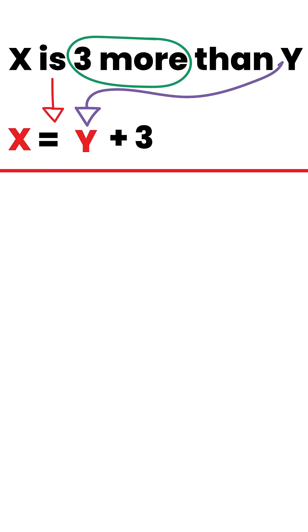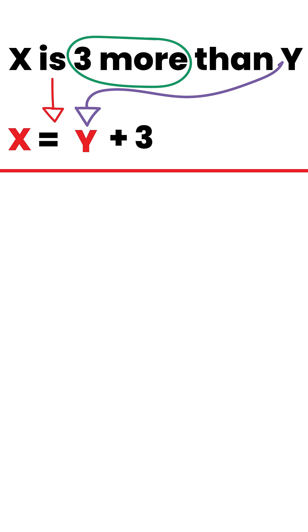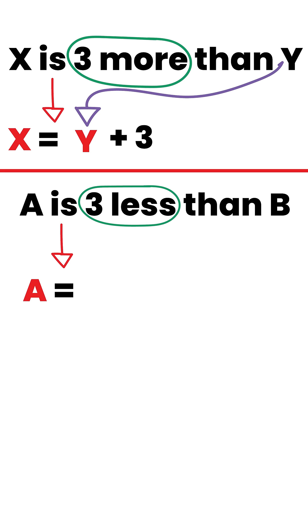Let's say the question says that 'a is three less than b.' So 'a equals three less' means minus three. Now what is it three less than? It's three less than b. So a equals b minus three.